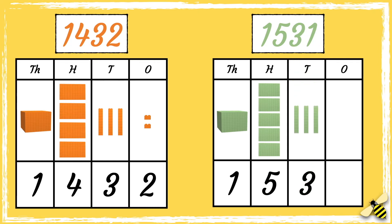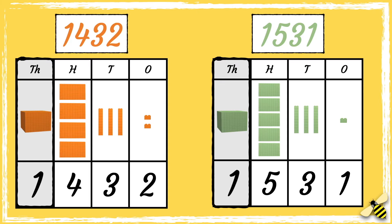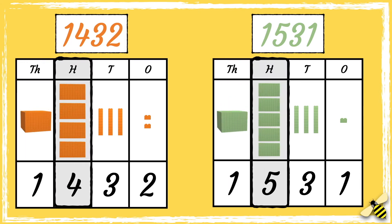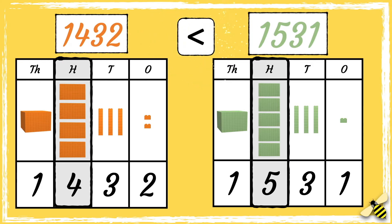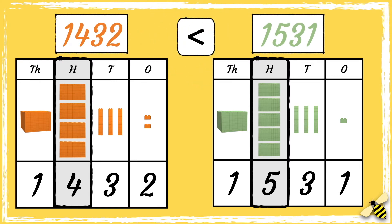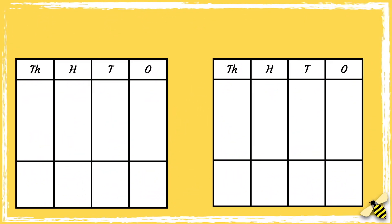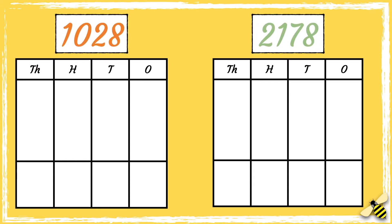The number 1531 has one thousand, it has five hundreds, it has three tens and it has one one. When we compare numbers we look at the thousands digits first. Both of the numbers have one thousand, so we move on to the hundreds. The orange number has four hundreds and the green number has five hundreds, so we can see that 1432 is less than 1531.